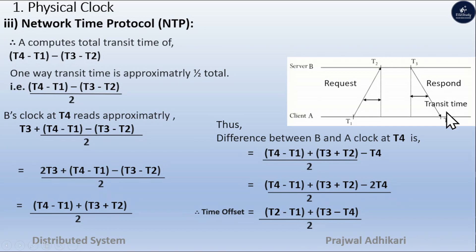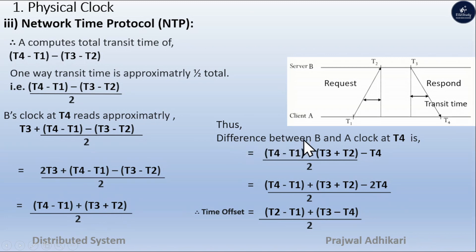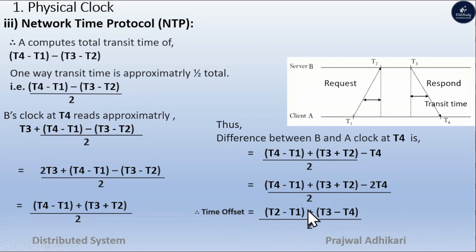The server clock reading at T4 is approximately T3 plus the one-way transit time. The B clock at T4 is given by: (T4 − T1 + T3 + T2) / 2. The time offset between B clock at T4 is: (T4 − T1 + T3 + T2) / 2 − T4. Simplifying, the time offset = (T2 − T1 + T3 − T4) / 2. This is the numerical expression for Network Time Protocol.